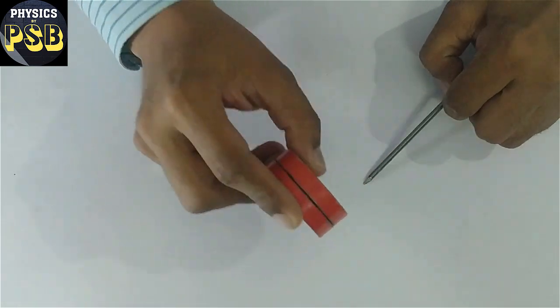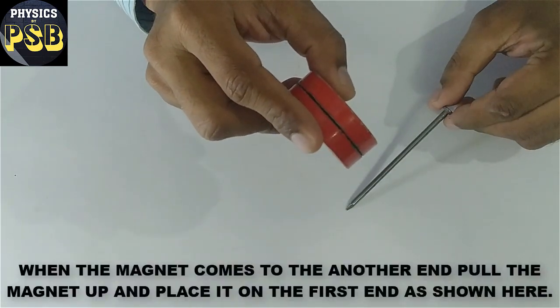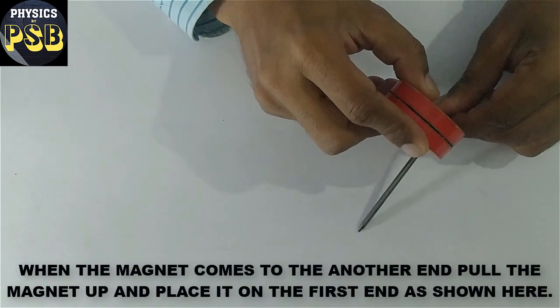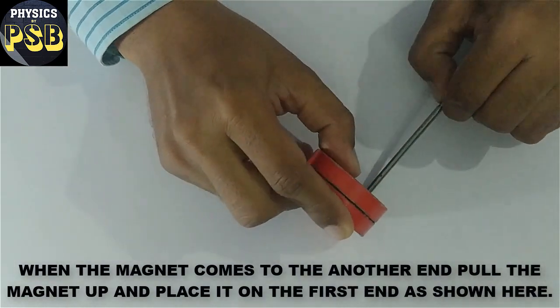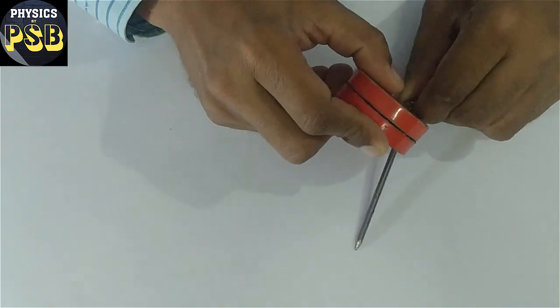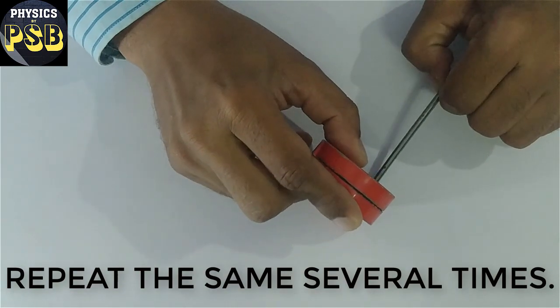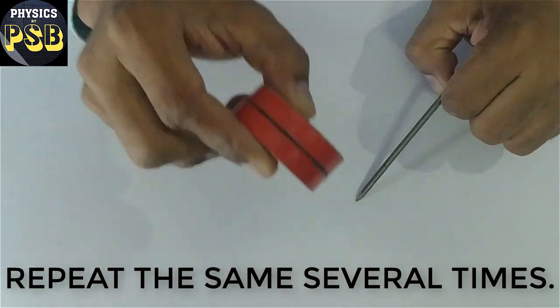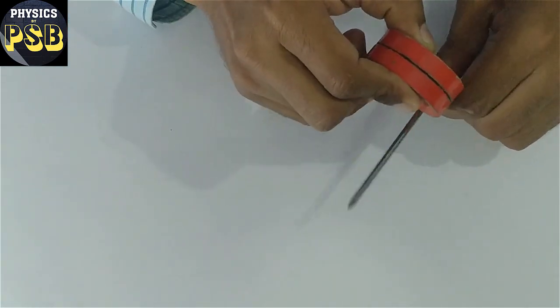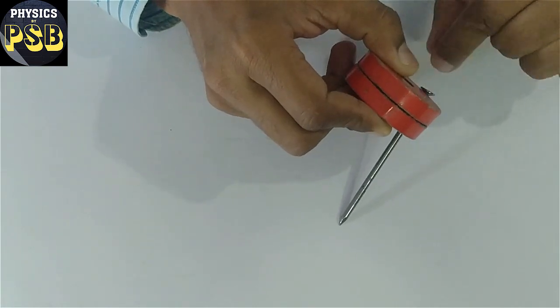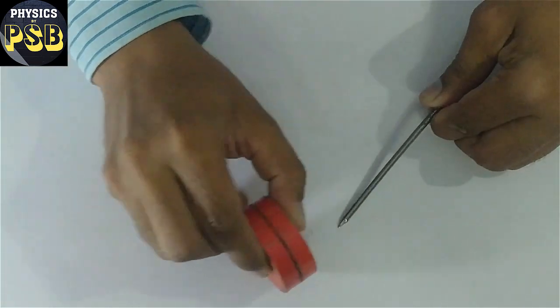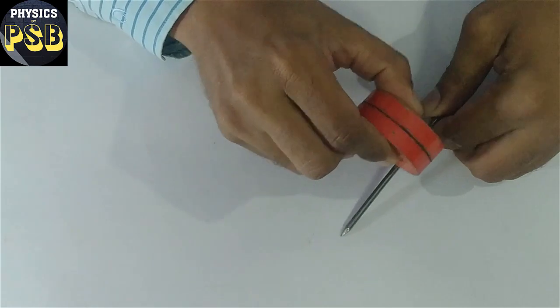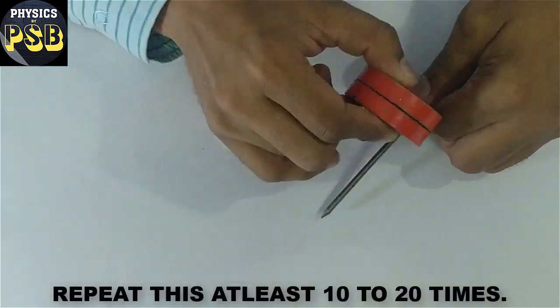When it comes to the other end, just pull the magnet and place it on the other end. You need to repeat this a few times, maybe 10 to 20 times.